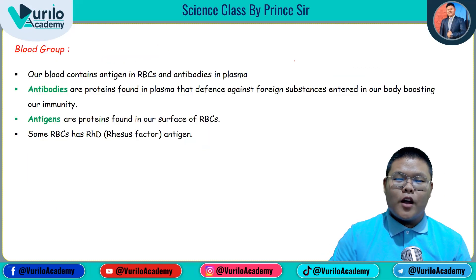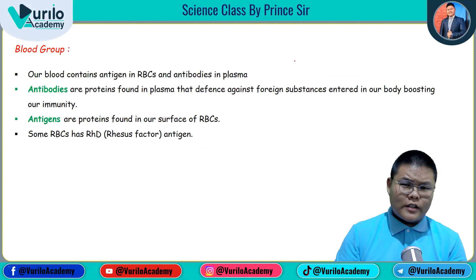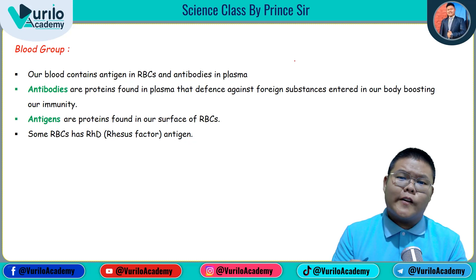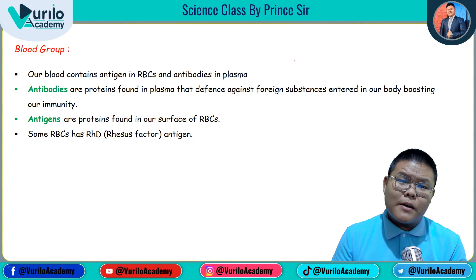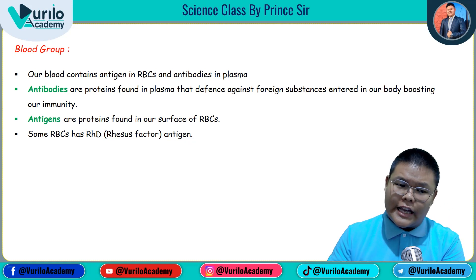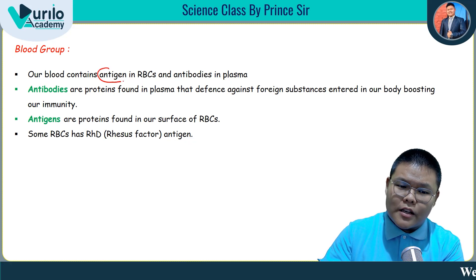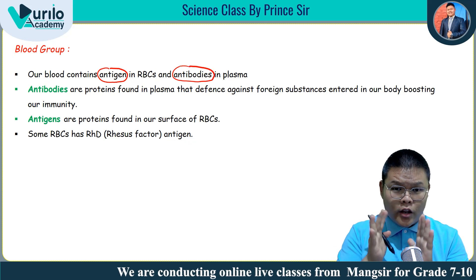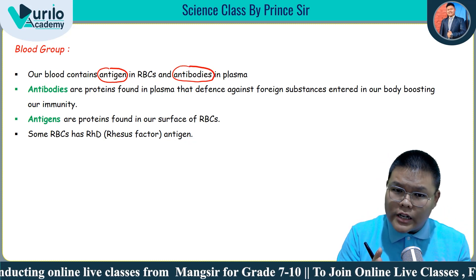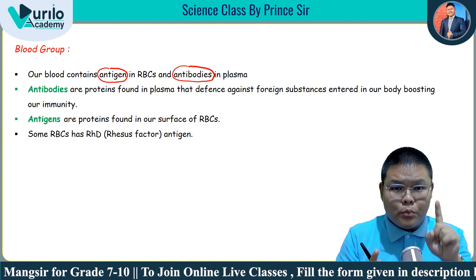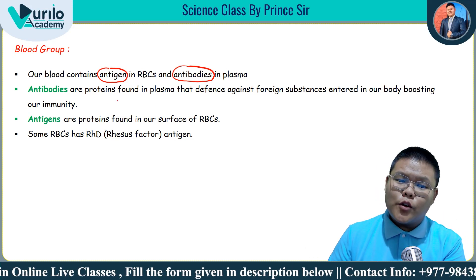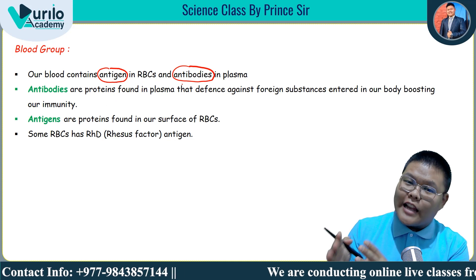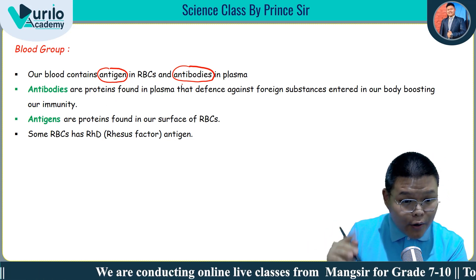Now let's talk about blood groups. In our blood, plasma and RBCs contain certain types of proteins. The protein found on the surface of our RBCs is called an antigen, and the protein found in plasma is called an antibody. The function of antibody is to fight against foreign substances — it increases our immunity.